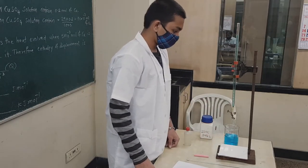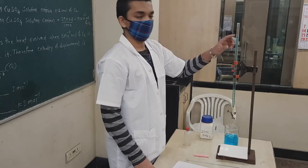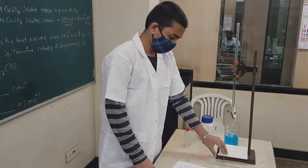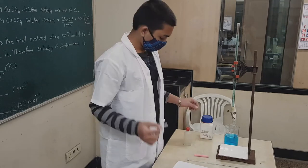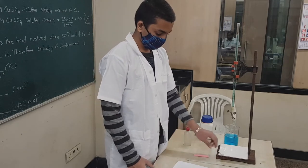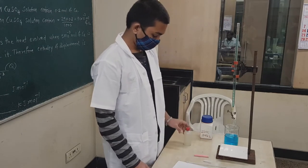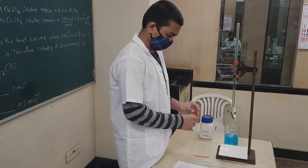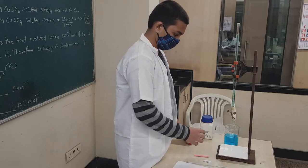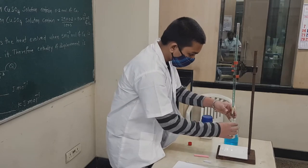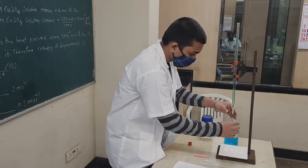Your copper sulfate solution is now filled in the burette. Zinc dust powder is also provided in a small packet of 1 gram, but we don't require that right now. We have to collect 25 ml of copper sulfate solution from the burette into the polythene bottle carefully, and we have to note the temperature of that — that will be called the initial temperature T1 degrees Celsius.